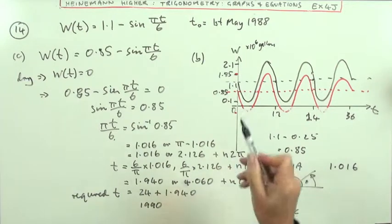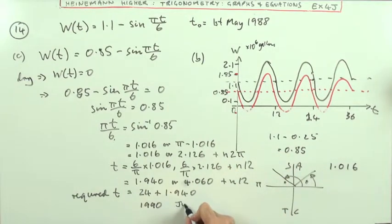I've got one month after the May. So it's going to be June. And the fraction of the June is this part here is 0.940. So I'll just multiply that by 30. And if you do 30 times that, you get 20 in a bit. So I've got the 28th. So the date it should run dry on is the 28th of June, 1990.